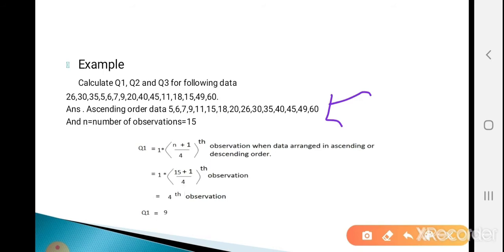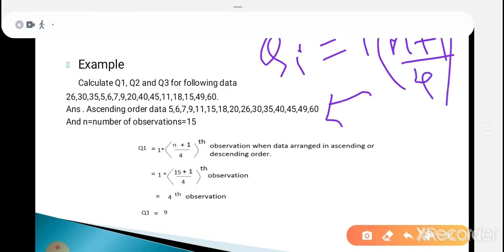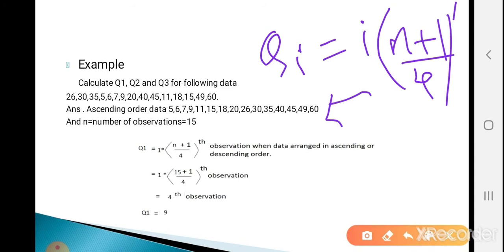First find Q1. For Q1, put i equal to 1. So Q1 equals 1 times (n+1) divided by 4 = 1 times (15+1)/4 = 16/4 = 4th observation. The 4th observation in the arranged data is 9. So Q1 equals 9.